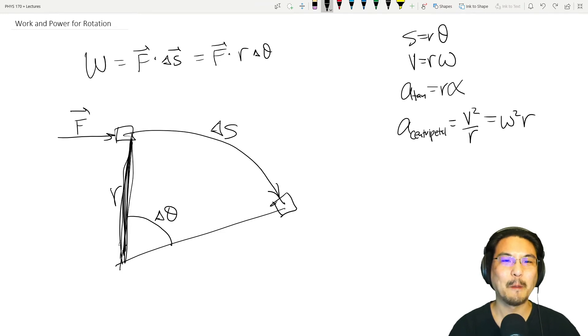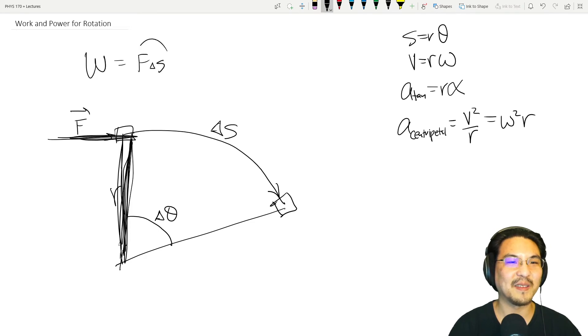So if these are perpendicular, this becomes torque. What looks like this in a straight line looks like—oh, I erased a little bit too much—it was F·rΔθ. If they're perpendicular, that's torque.